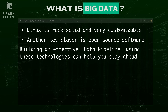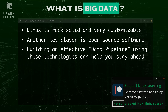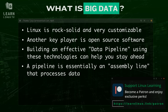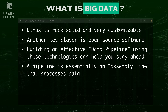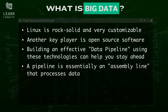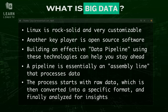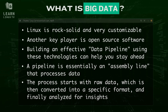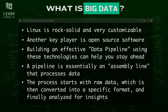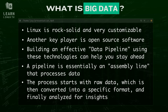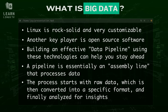A big data pipeline is an assembly line of sorts geared towards processing huge workloads. More precisely, it's a structured and automated process that takes massive amounts of raw data — often coming from multiple different sources — and turns it into something useful. You can think of it as a supply chain for data. The process starts with raw data collected from various sources such as apps, logs, and databases. That data is then organized and converted into a specific format. Finally, the data is stored and analyzed in order to extract insights or make decisions, all handled in near or real time.